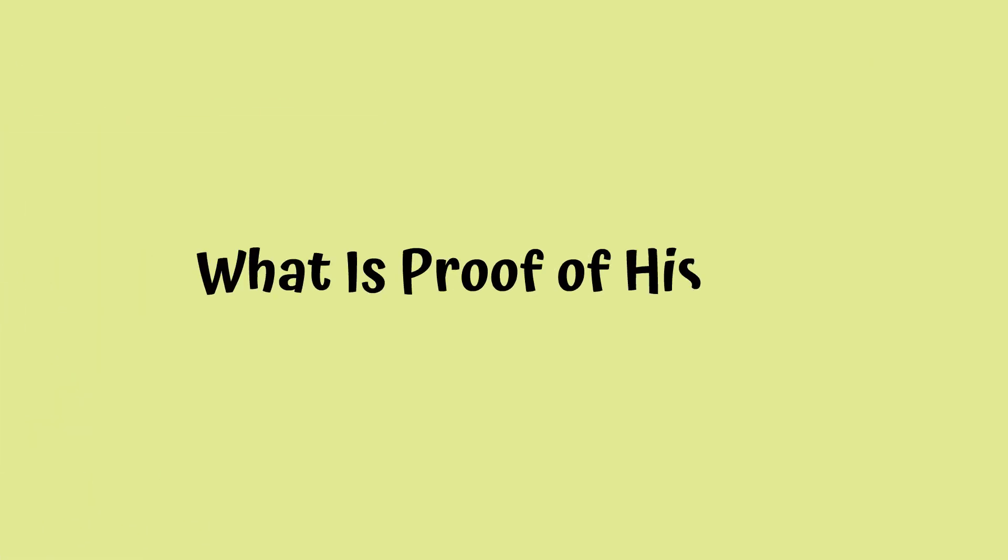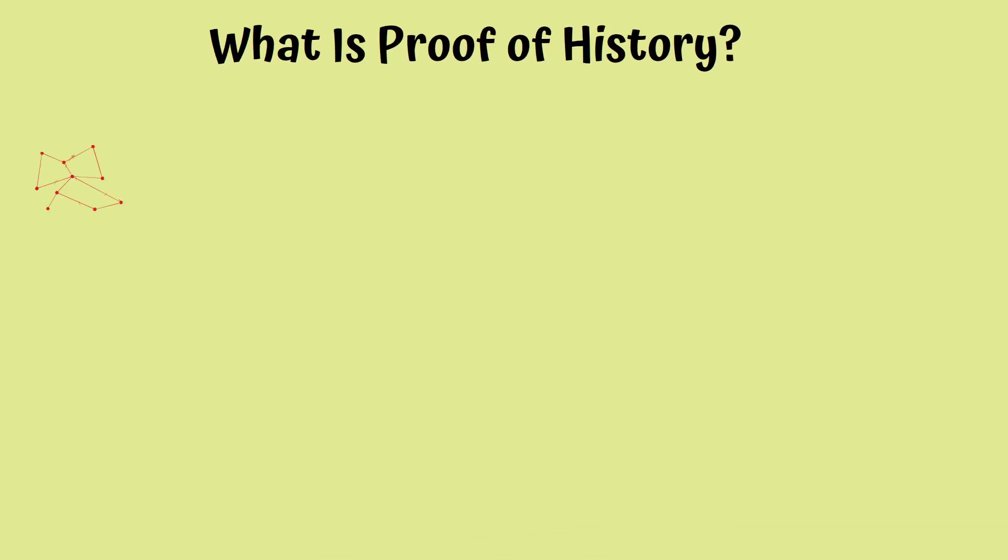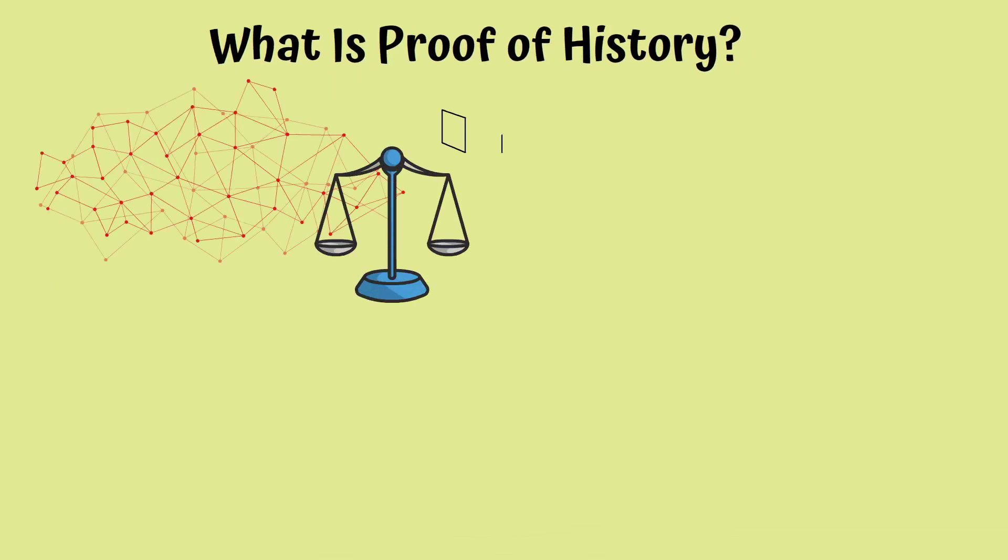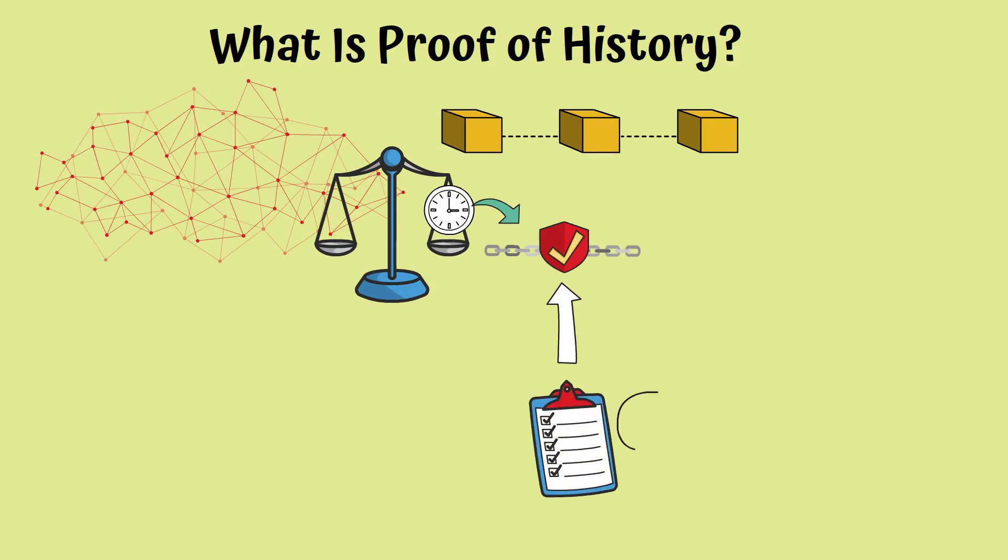What is proof of history? Proof of history is used to lighten the load of the network nodes in processing blocks by offering a method of encoding time itself into the blockchain. When we talk about the regular blockchain, one of the most important things is to reach a consensus regarding the time spent for mining a block, just like reaching a consensus over the existence of the transactions and that block.